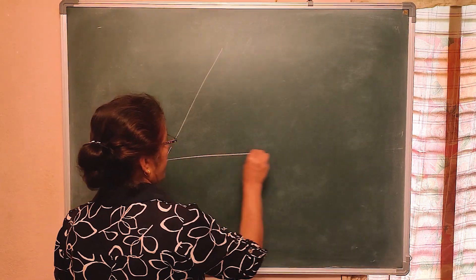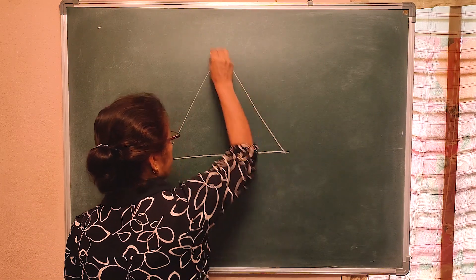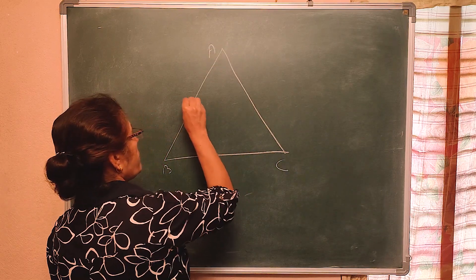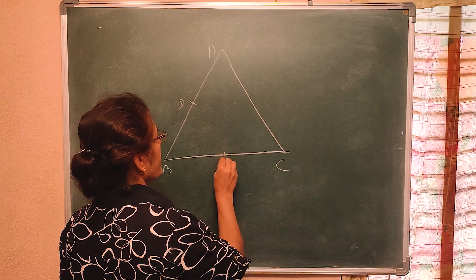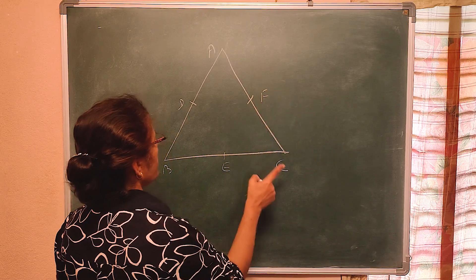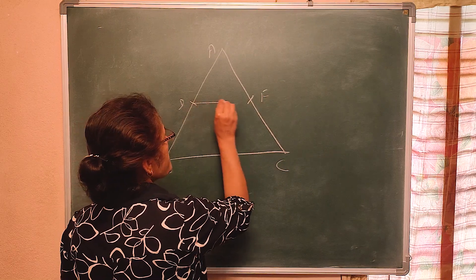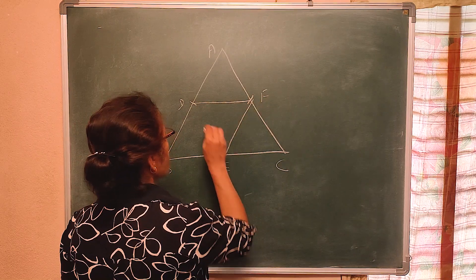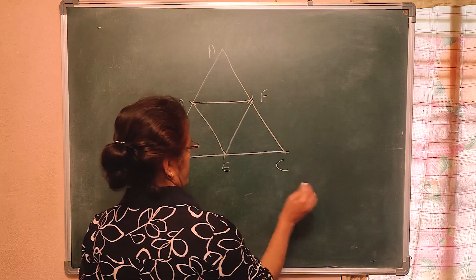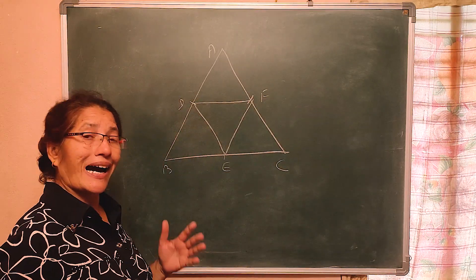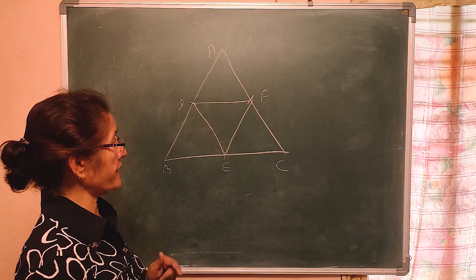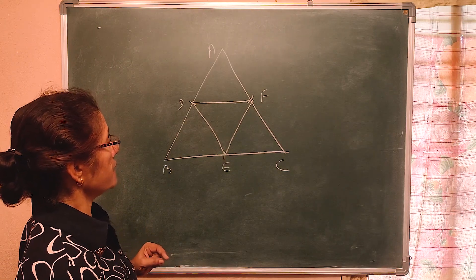There is a triangle ABC. D is the midpoint of AB, E is the midpoint of BC, and F is the midpoint of AC. We want to compare the area of triangle DEF and the area of triangle ABC. Are they similar? Yes, definitely they are similar — you can prove it.